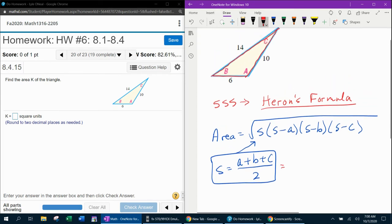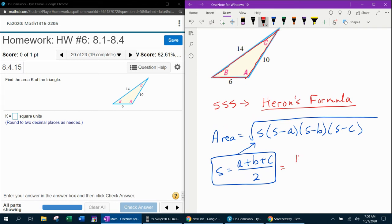The semi-perimeter is going to be 14 plus 10 plus 6 all over 2. And I can do that mentally pretty easily because 14 and 6 is 20, 20 and 10 is 30, half of 30 is 15. And then this 15 is going to take the place of every one of these S's in Heron's formula.